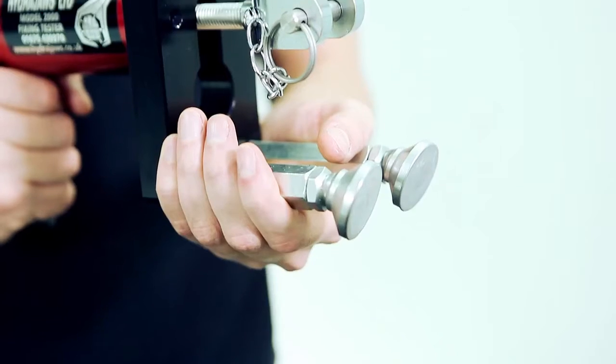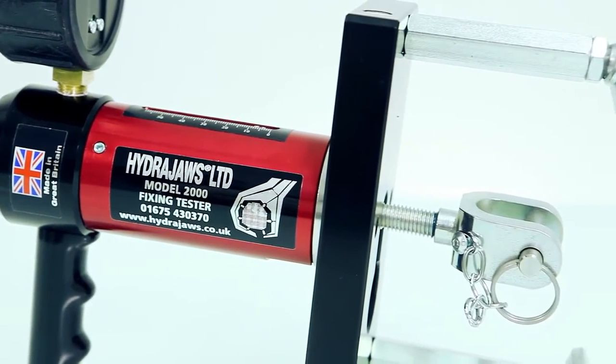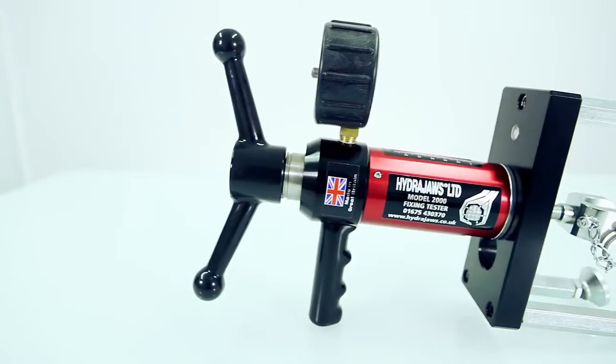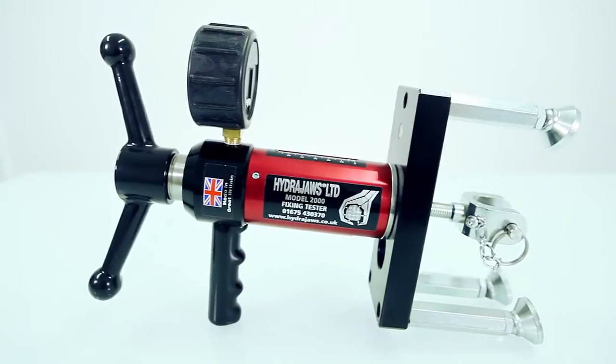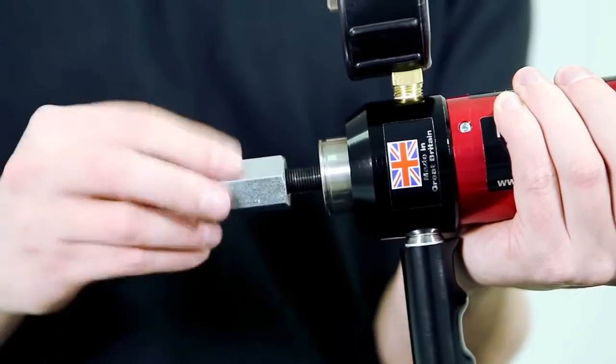This specific tester can also be used to test other eye bolts and ring bolt applications for festive lighting, window cleaners, and other applications at height. Supplied with a 22mm operating nut for use in confined spaces.